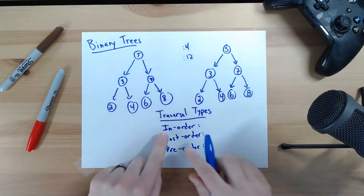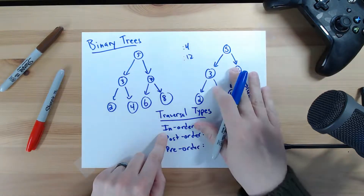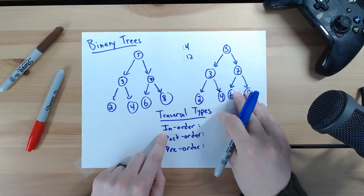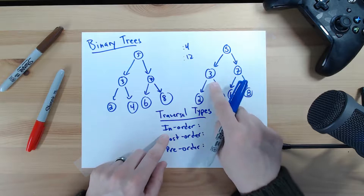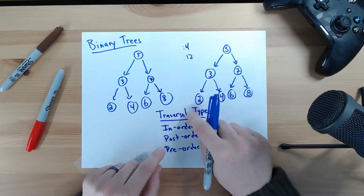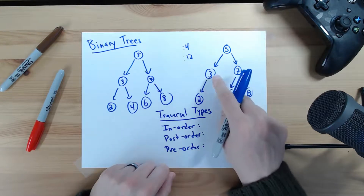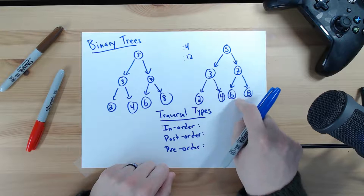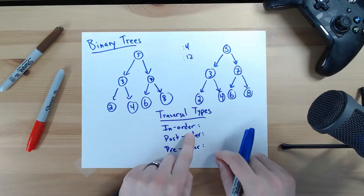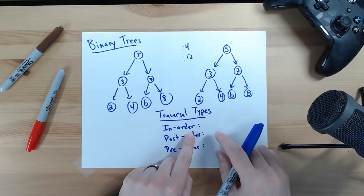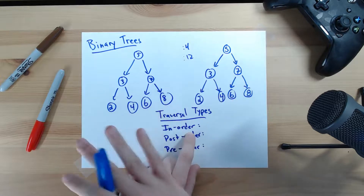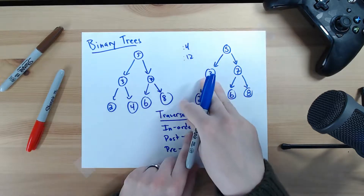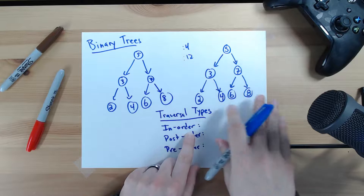If we take a look at in-order: because this is a sorted binary tree, we know that everything to the left of any of our nodes is going to be less than the current node, and anything to the right is going to be greater. In-order traversal essentially says let's explore everything to the left — everything that's less than — then we'll explore the current node, and then we'll explore everything to the right.